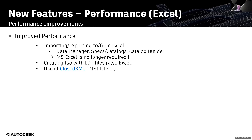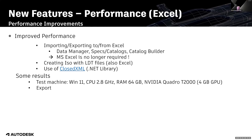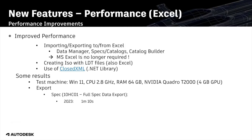Here is a test I ran on my desktop — a laptop using Windows 11. The CPU at 2.8 GHz is okay but not great. The RAM is 64 GB, which is good. The graphics card, an NVIDIA Quadro P2000 with only 4 GB GPU, could really be better. My first export was from standard spec 10HC01, a full spec data export in 2023: I needed 1 minute and 10 seconds. In 2024, the answer is 8 seconds.